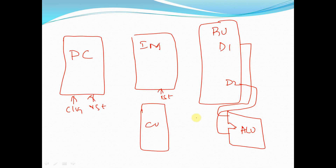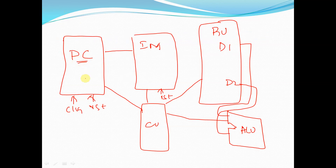There is a control unit which is going to control all the components — the PC, instruction memory, register unit, and ALU. The program counter is associated with our instruction memory. So this is called the program counter, and we have the instruction memory, register unit, control unit, and ALU.